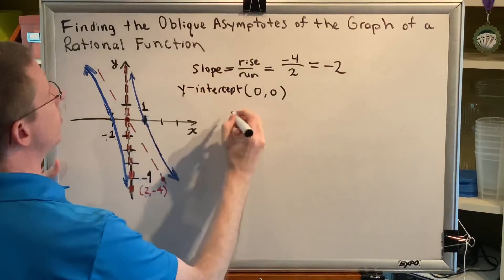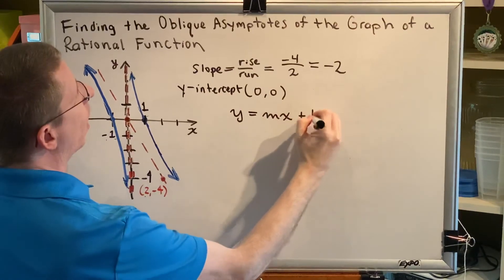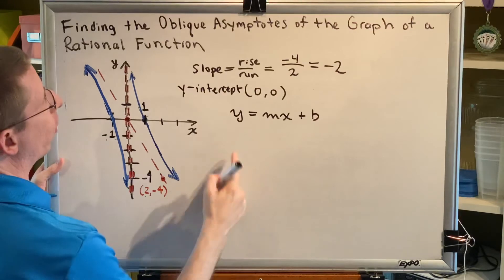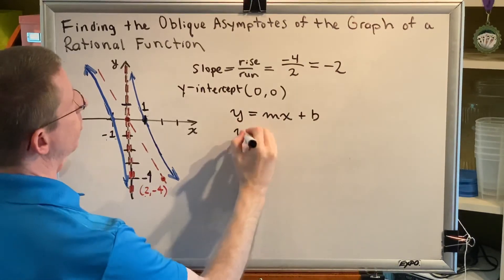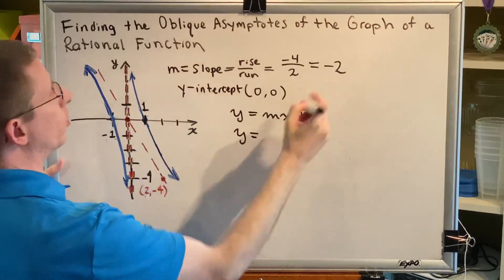And using those two pieces of information we can write the equation of our oblique asymptote using the slope-intercept form of the line y equals mx plus b. m, the slope, is equal to negative two.